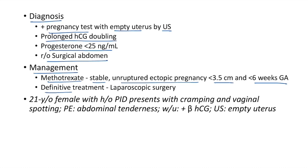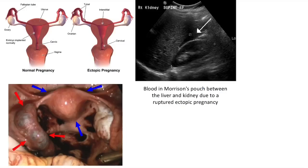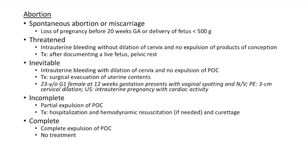Clinical case of ectopic pregnancy: 21-year-old female with history of PID presents with cramping and vaginal spotting. Examination shows abdominal tenderness. Workup shows positive β-HCG and ultrasound shows empty uterus — this is a case of ectopic pregnancy. Images show normal uterine implantation, various sites of ectopic pregnancy (ovary, fallopian tube most common, cervical, interstitial), a clinical image of the embryo implanted in the fallopian tube, and blood in Morrison's pouch between liver and kidney due to a ruptured ectopic.